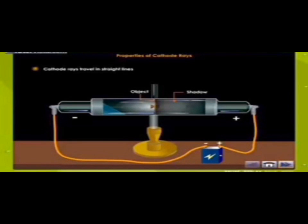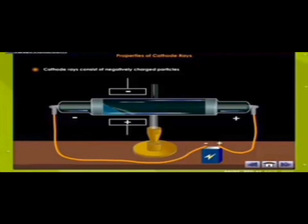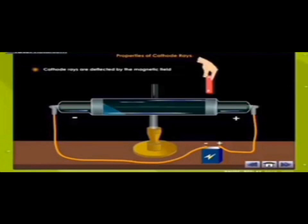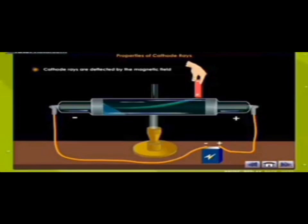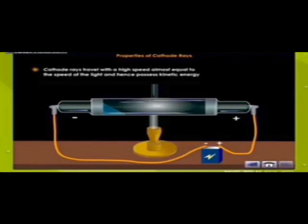Cathode rays consist of negatively charged particles. The rays deflect towards the positive plate when the tube is exposed to an electric field, because the negatively charged particles in the cathode rays get attracted towards the positive plate. Cathode rays are also deflected by a magnetic field — when the tube is exposed to a magnetic field, the cathode rays follow a curved path. Cathode rays produce X-rays when they impinge on a metal with a high atomic weight. Cathode rays travel with a high speed almost equal to the speed of light and hence possess kinetic energy. When cathode rays are made to fall on a pedal wheel, the wheel starts rotating, showing that the rays possess kinetic energy.